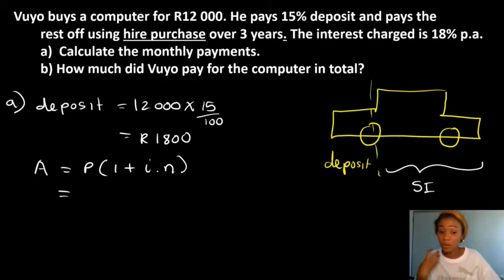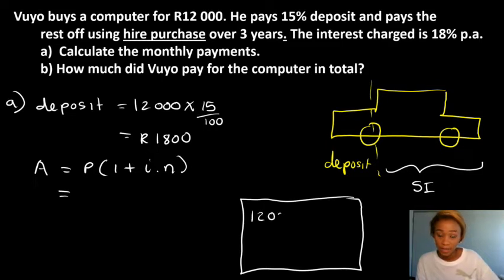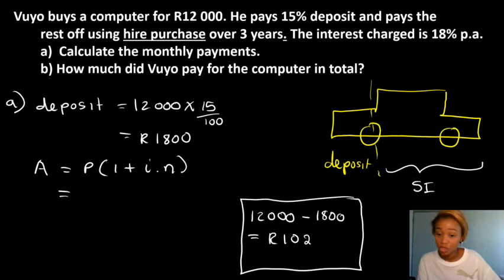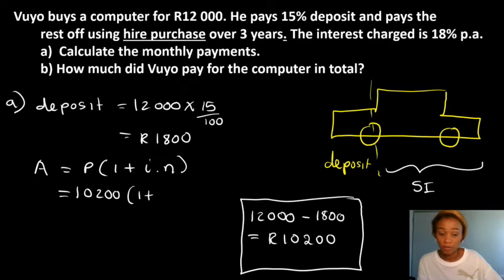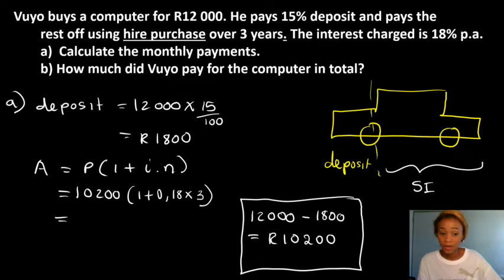Now, what will P be? The computer was 12,000 and he paid 1,800 deposit, so he was short of 10,200. That's when he went to the bank and asked for a loan. So P equals 10,200. Then we have 1 plus 0.18 — that's the 18% interest — times by 3 years. The answer we get is 15,708.